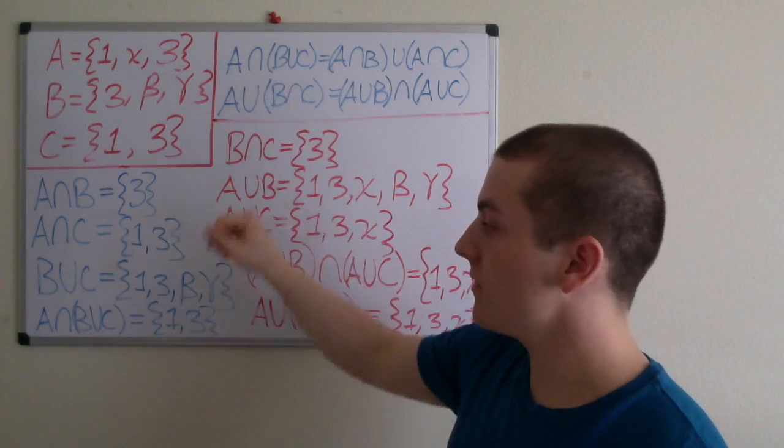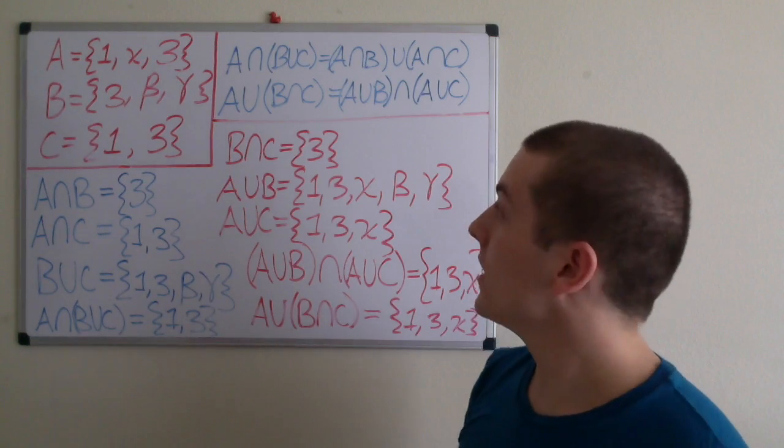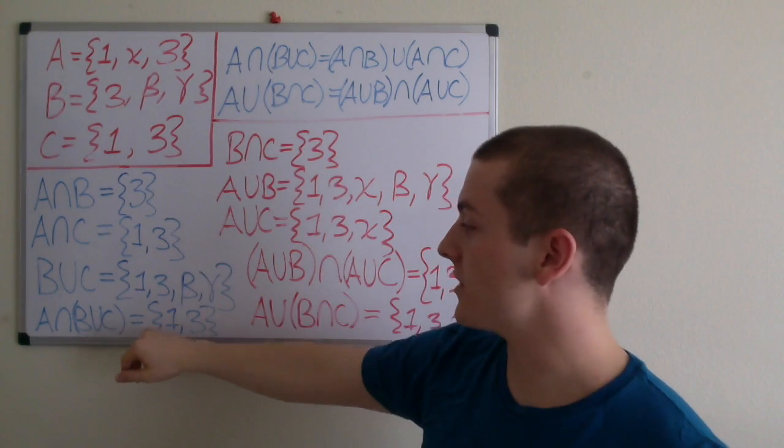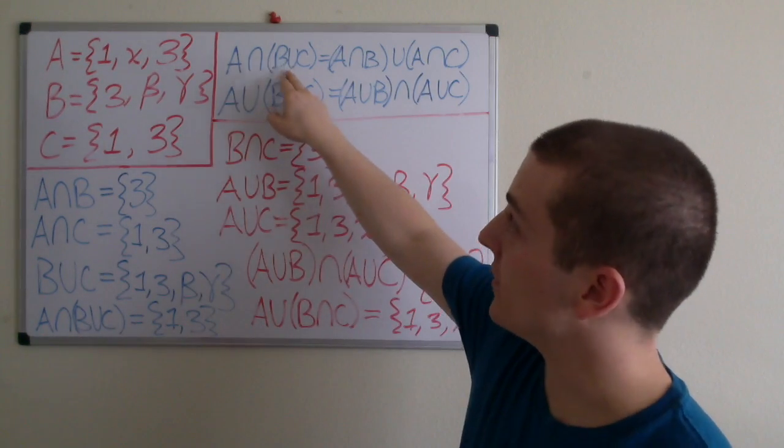Now if we look at B union C, that equals the set containing elements 1, 3, beta, and gamma. And if we take the intersection of that set with A, we're left with the set containing elements 1 and 3, which is good because now we've shown that this is equal to that.